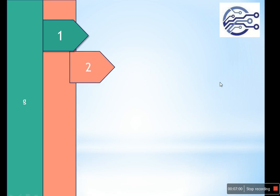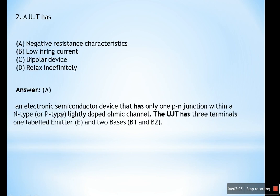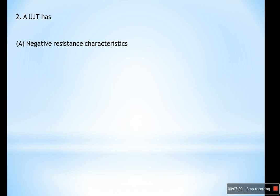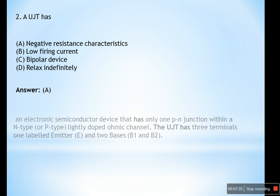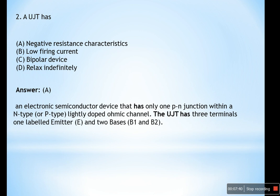Question number two: The UJT has — (A) negative resistance characteristics, (B) low firing current, (C) it is a bipolar device, or (D) relaxes indefinitely. The UJT (Unijunction Transistor) is used as a relaxation oscillator. The answer is negative resistance characteristics. The UJT has a single PN junction within an N-type lightly doped ohmic channel, with three terminals: emitter, base 1, and base 2.